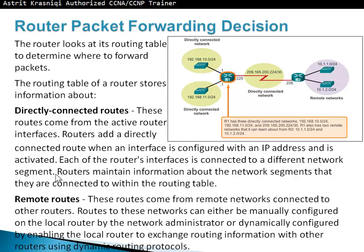Now, router packet forwarding decisions. The router looks at its routing table to determine where to forward packets, the same way a host does. A router will have information about directly connected networks — directly connected routes — and remote routes. Directly connected routes come from active router interfaces. A router adds a directly connected route when an interface is configured with an IP address and activated. Each of the router's interfaces is connected to a different network segment.